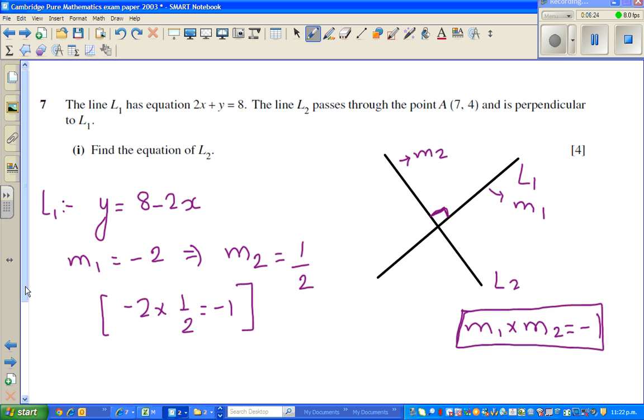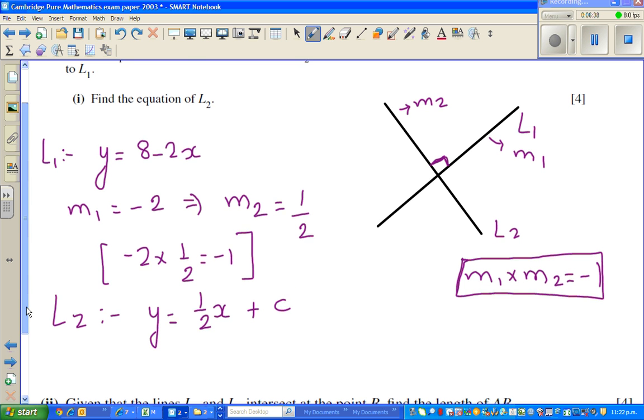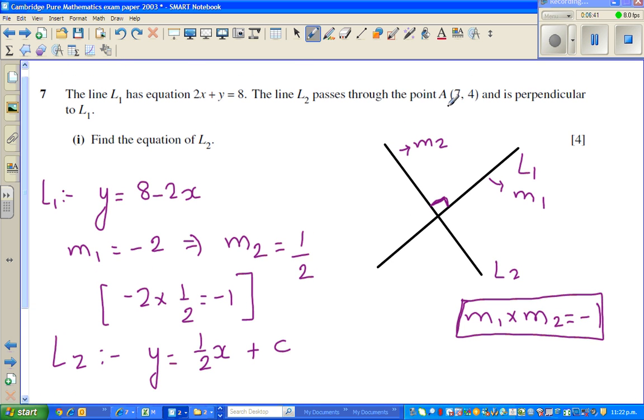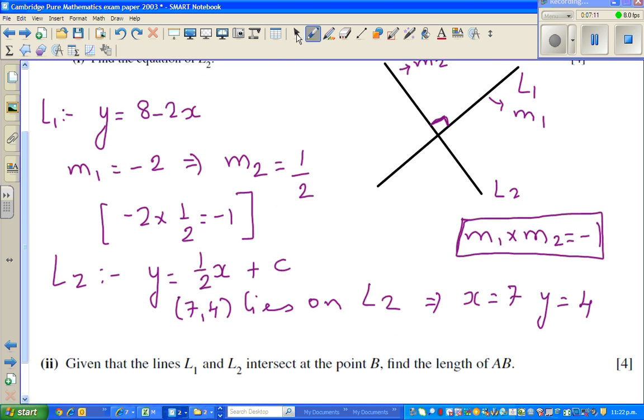I know the gradient of L2 is half. So the equation of L2 should be y equals half x plus c. What other information do I know? The line L2 passes through 7, 4. That means this point satisfies this equation.